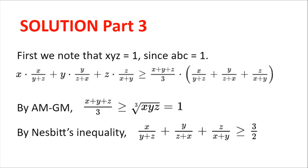We first note that xyz equals 1, since abc equals 1 and x, y, z are defined as 1/a, 1/b, 1/c. So by AM-GM, (x plus y plus z) divided by 3 is greater than or equal to the cube root of xyz, which we know is the cube root of 1, which is 1. Now the second part of the right hand side is in fact the left hand side of Nesbitt's inequality. And so x divided by (y plus z) plus y divided by (z plus x) plus z divided by (x plus y) is greater than or equal to three halves.